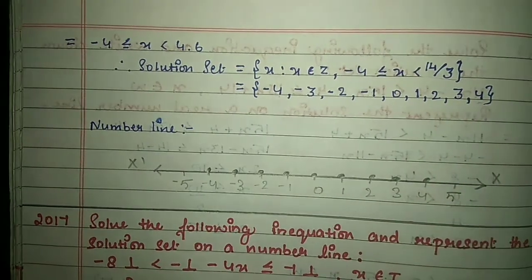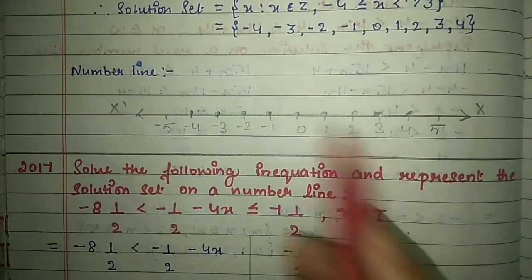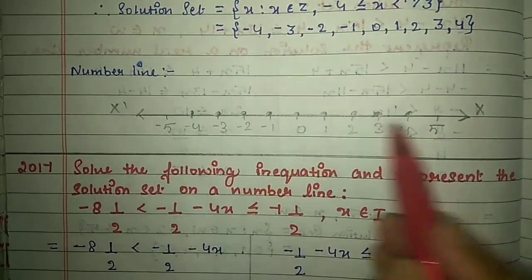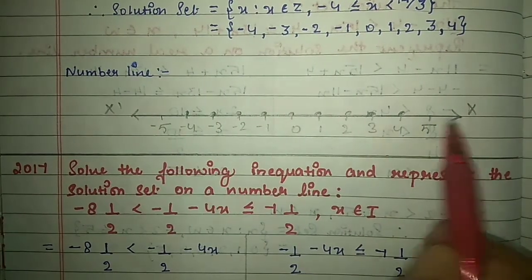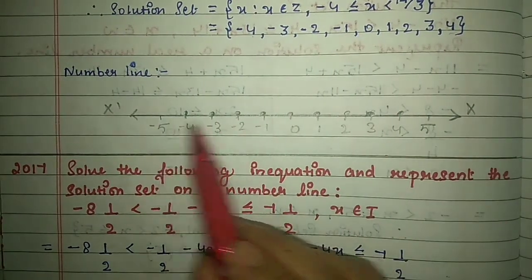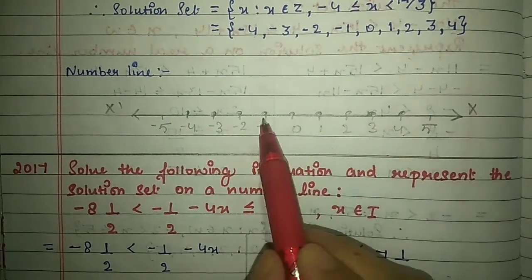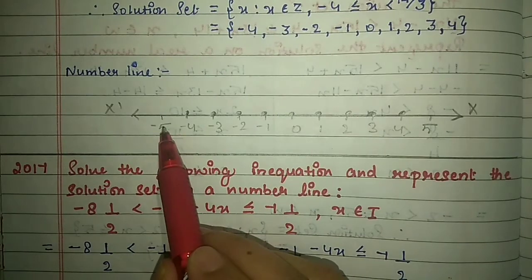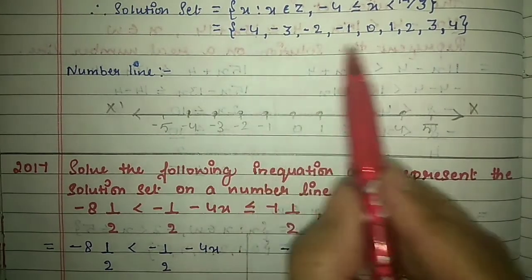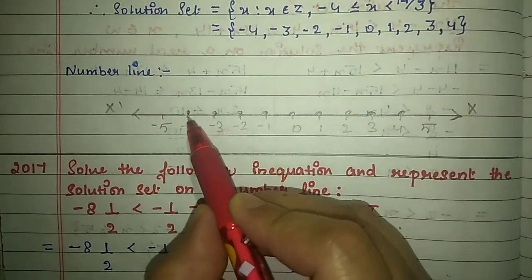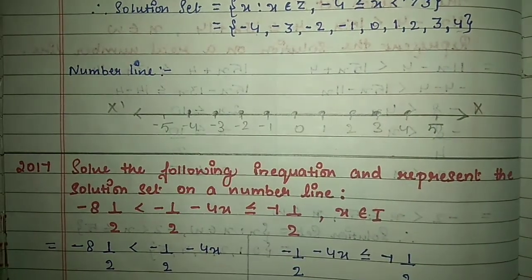Represent on the number line. Draw a line with pencil and scale, mark both side arrows, mark 0, right side positive, left side negative integers, and mark these points on the number line with pencil.